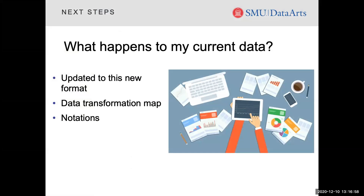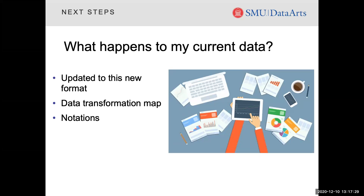Let's talk about what will happen to your current data. All of your current data will be transformed to the new format, which means trend reporting will be possible from one format to another in your funder reports. We'll make that data available through a transformation manual that will provide details about how the transformation happened. Notations about how the data was transformed have also been left in the notes fields. If you need access to your data in the previous format, you can contact our support center and it can be shared with you in Excel or CSV file, or we can share specific data points with you.